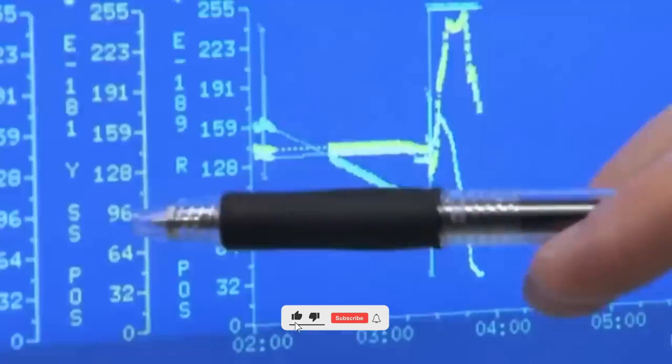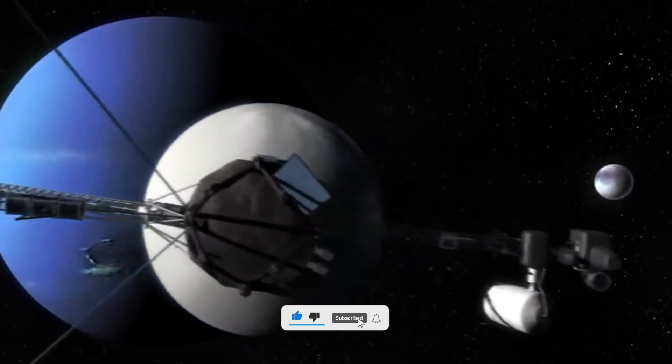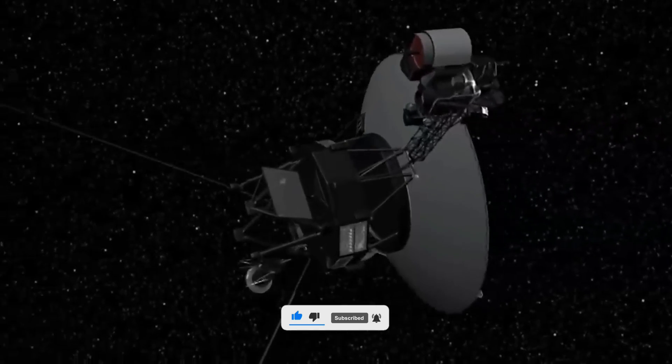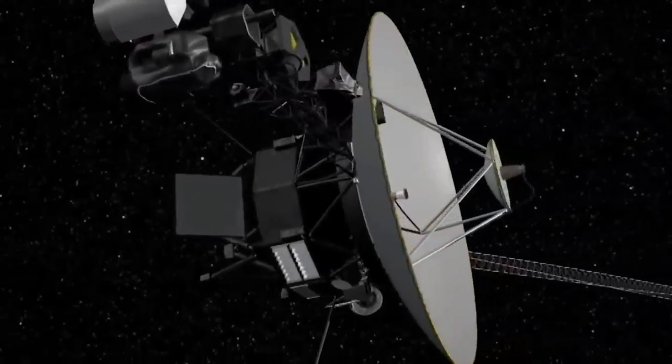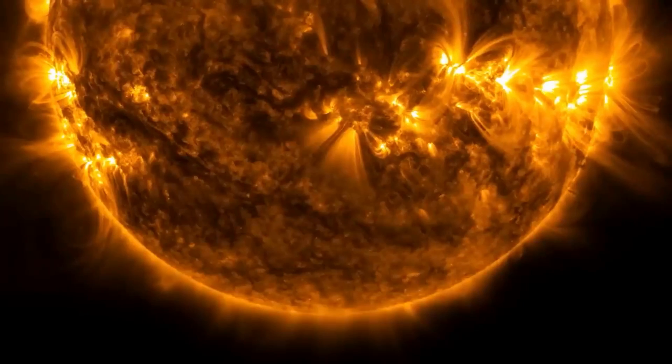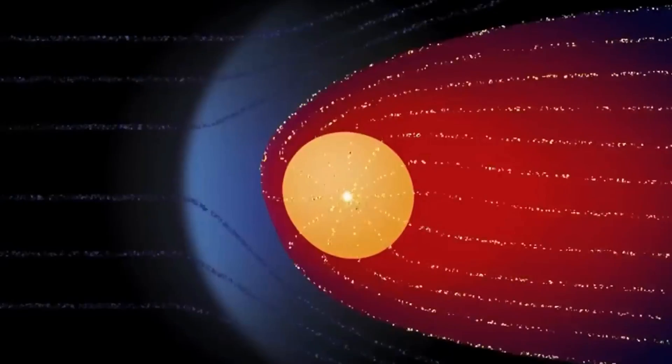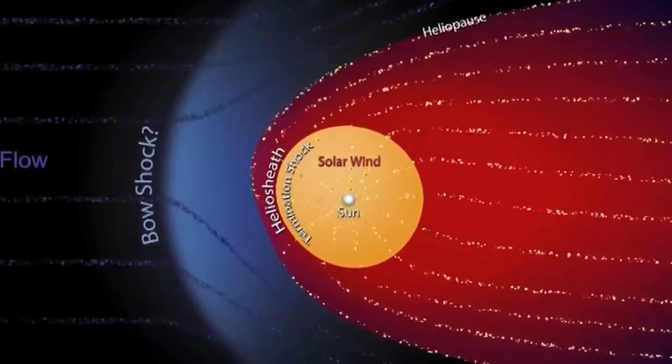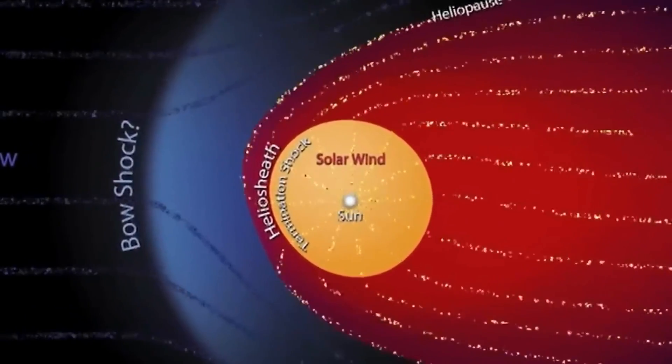NASA launched the Voyager mission in 1977 with two probes, Voyager 1 and Voyager 2, with the primary goal of exploring the outer solar system. The Voyager probes were designed to study our solar system's giant planets including Jupiter, Saturn, Uranus, and Neptune, as well as their moons and surrounding interplanetary space.